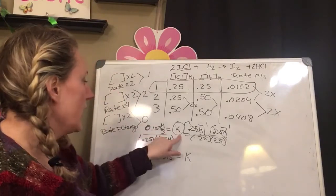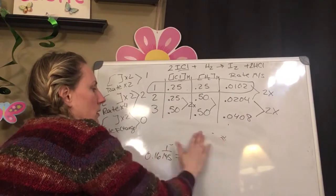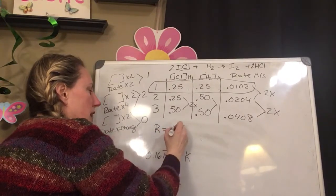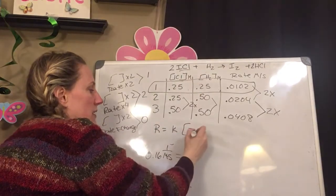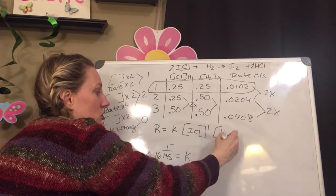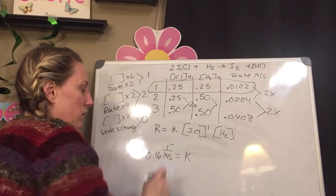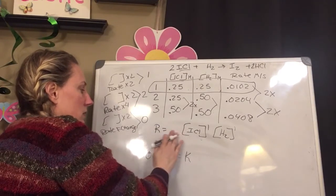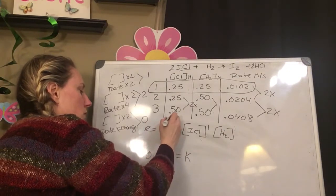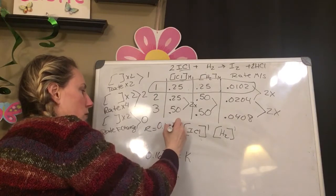So now I have my k, then I go back to what it was. My rate equals k times the concentration of ICl to the 1 times the concentration of H2 to the 1, and I put in this for my rate constant. So I would put, move this over, rate, oh, equals 0.161 over molar second. And that is my rate.